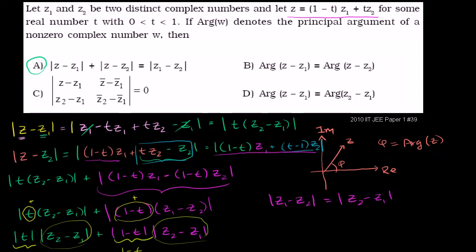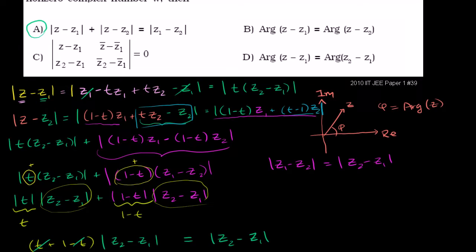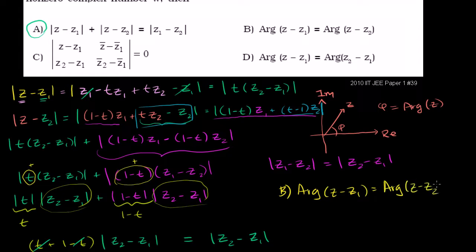Choice B is telling us that the argument of z minus z1 is equal to the argument of z minus z2. We already did some work — we simplified what z minus z1 is equal to: it's equal to t times z2 minus z1.